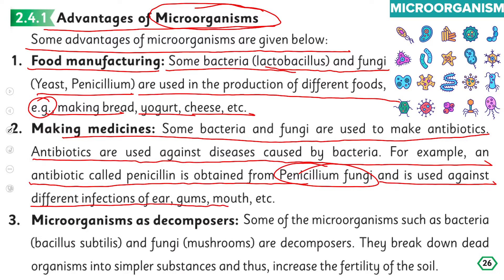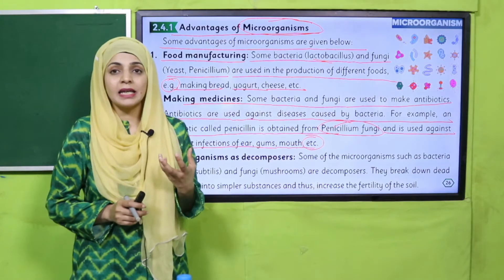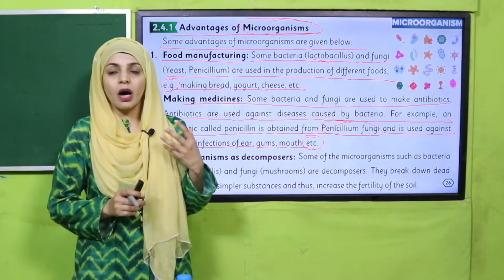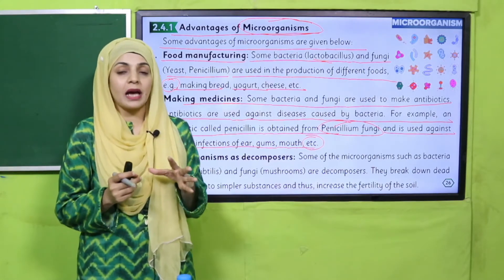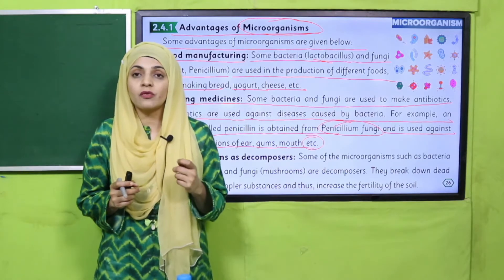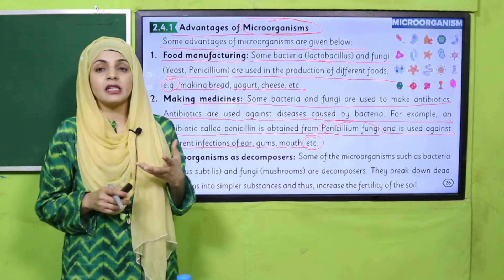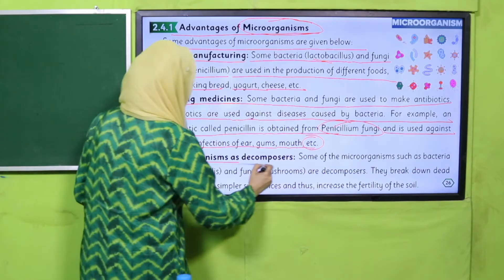Penicillin is used against different infections of the ear, gums, mouth, etc. Many microorganisms are used in medicine making. Penicillin is an antibiotic obtained from Penicillium fungi, and it is used for the treatment of gums, mouth, and ear infections.